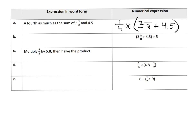Over here, what are we going to do? Well, first we're going to find the sum and then we're going to divide by 5. So what you would write over here is the sum of 3 and 1 eighth and 4.5 divided by 5.